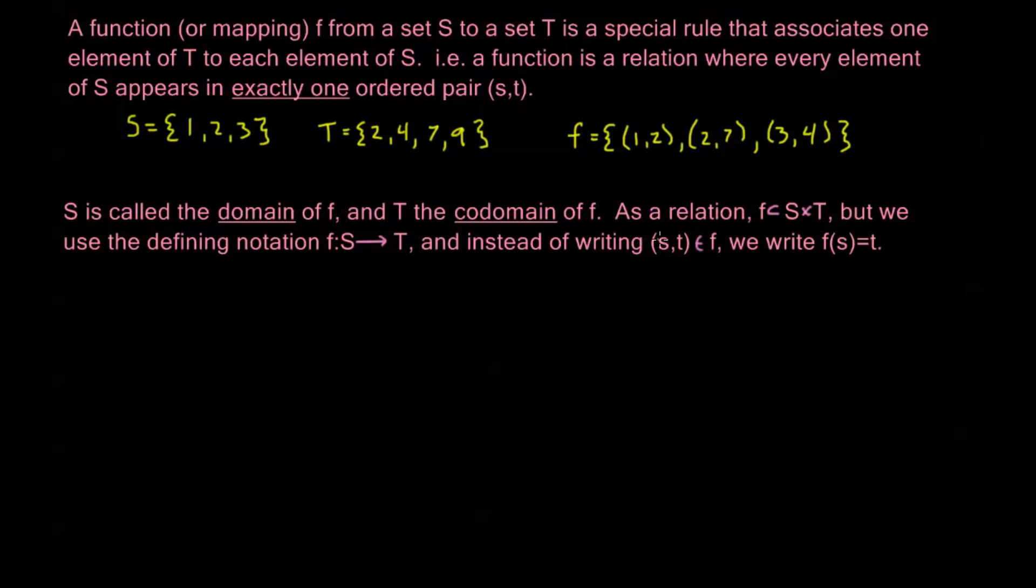And instead of writing an ordered pair (s,t) is an element of the relation f, we will write f(s) = t. This is well-defined because we're going to use each s only once here.